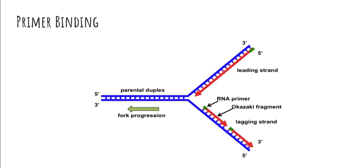On the three prime to five prime DNA strand, we need multiple RNA primers because DNA replication occurs in the other direction. These two patterns occur because DNA replication always occurs in the five prime to three prime direction, and since these strands are in opposite directions, replication occurs in opposite directions as well. So on the bottom strand — the three prime to five prime strand — known as the lagging strand, we need multiple RNA primers because replication occurs in the direction opposite from the fork. As the fork opens up more, you'll need another RNA primer. These little fragments that result are known as Okazaki fragments.